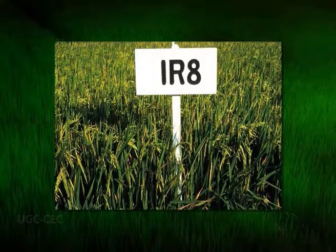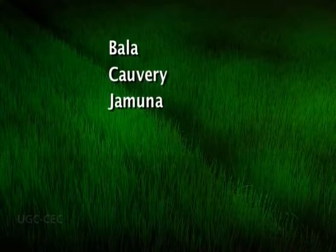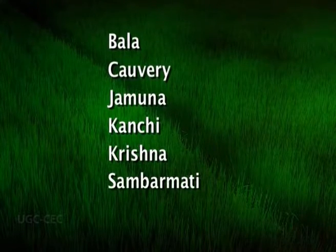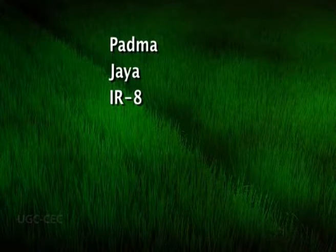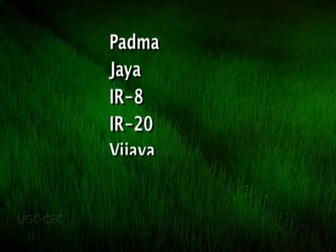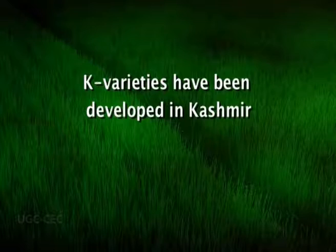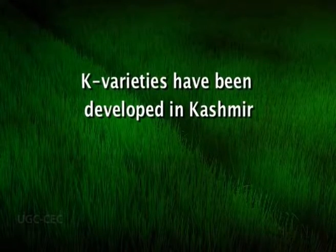High yielding varieties of rice include Bala, Kauvari, Jamna, Kaji, Krishna, Sabarmati, Ratna, Padma, Jaya, IR8, IR20, Vijaya, Pankaj and Jaganath. Due to the Mediterranean climatic conditions prevalent in Kashmir, distinct varieties labelled as K varieties have been developed.